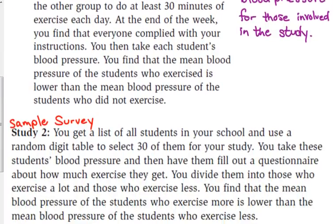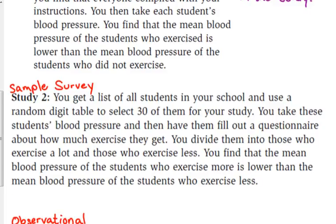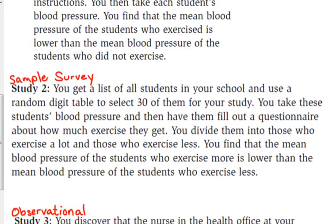Study 2 is a sample survey. We took a list of all the students in our school and used a random digit table to select 30 of them. We take their blood pressure and have them fill out a questionnaire. We divide them into those who exercise a lot and those who exercise less, and find that the mean blood pressure of those who exercise more is lower. Is it reasonable to conclude that exercise caused the lower blood pressure? Yes, it is reasonable to conclude that exercise means lower blood pressure.